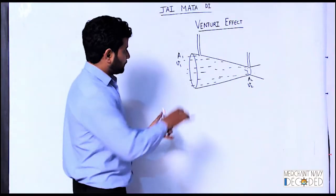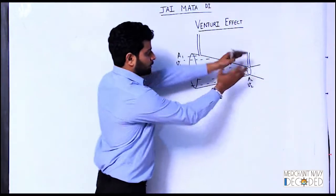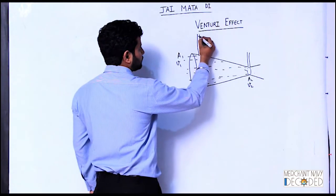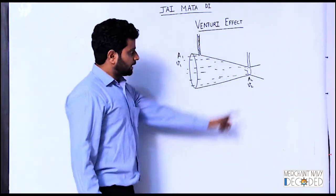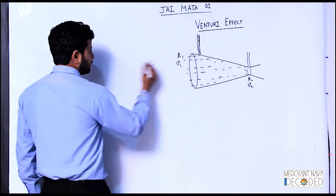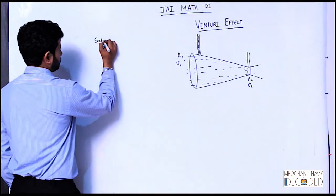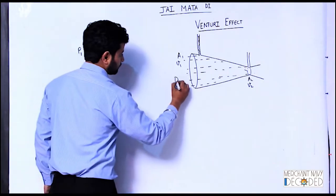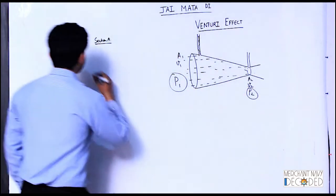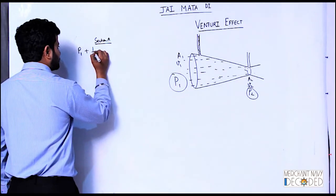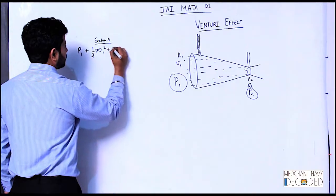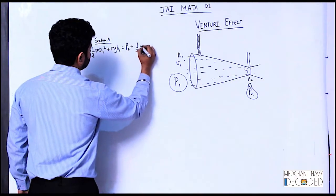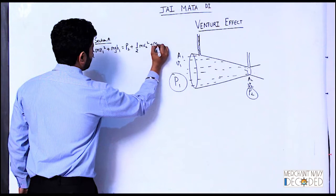Suppose it's a section of pipe. A convergent nozzle is over here. Whatever will be the pressure P1, water will rise over here. In section A, what is the total energy? P1 plus kinetic energy, half m V1 squared plus mgh1 is equal to in section B, P2 plus half m V2 squared plus mgh2.